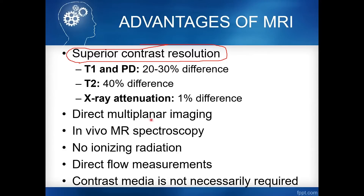The next advantage of MRI is direct multi-planar imaging. MRI can acquire images in 3D. Unlike CT scan, where images are mostly transverse and coronal or sagittal slices require post-processing (called indirect multi-planar imaging), MRI can directly acquire sagittal, coronal, transverse, and oblique images. This is due to the gradient coil, which is part of the MRI machine and enables direct multi-planar imaging.